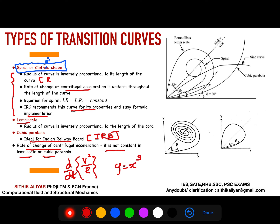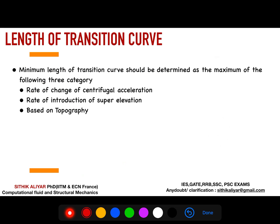IRC has suggested the spiral or clothoid shape because the rate of change of centrifugal acceleration is constant, the radius is inversely proportional to length, and it is easy to implement. For exam purposes, you should know the different types of shapes and that IRC uses the spiral or clothoid shape.